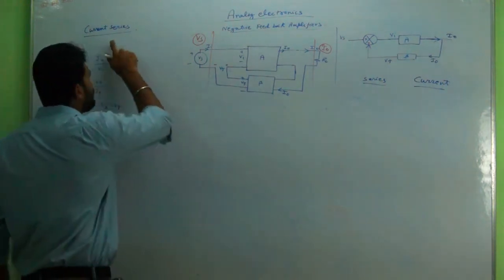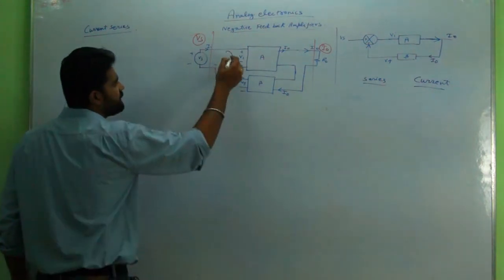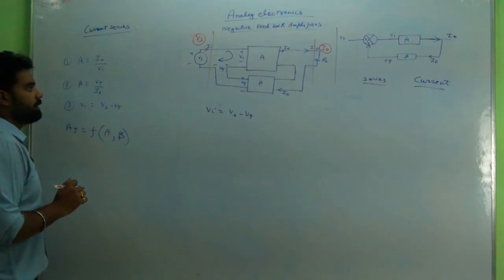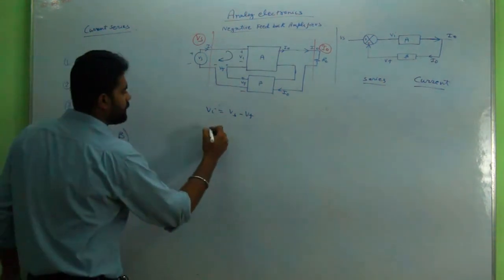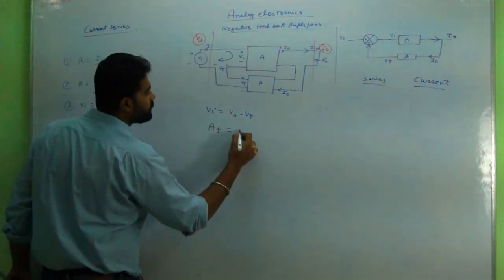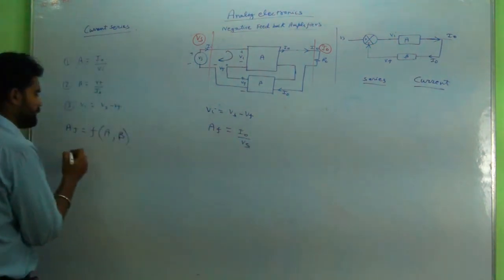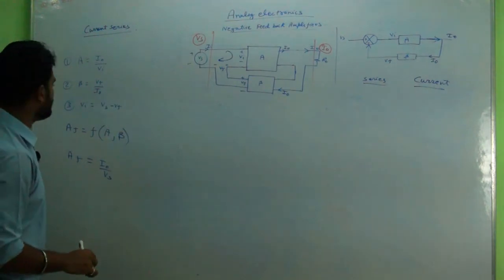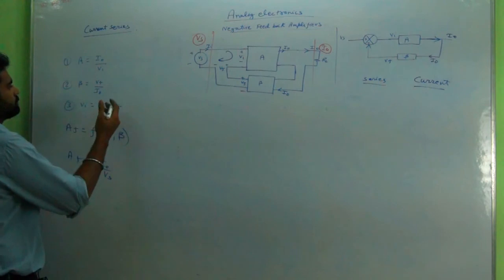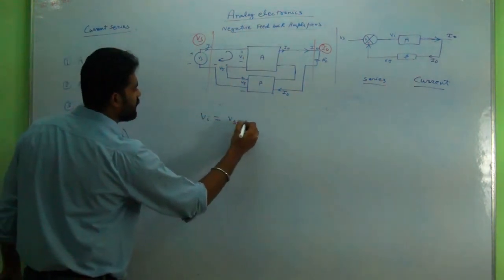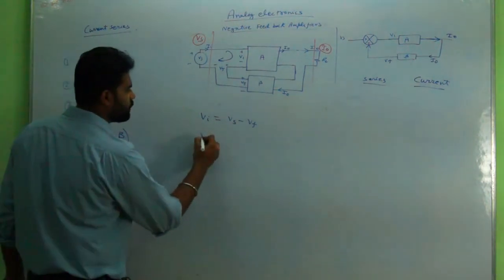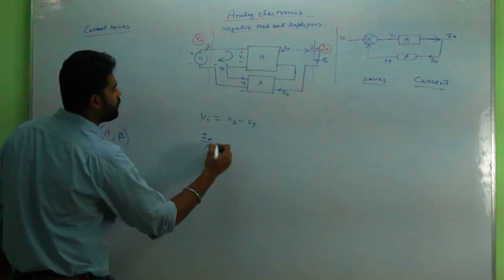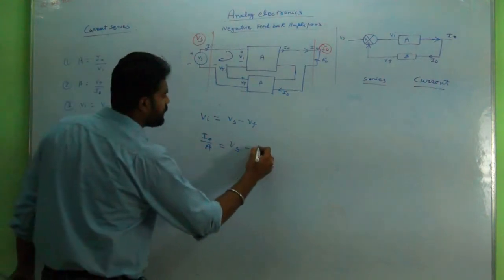We will start with the KVL equation: VI equal to VS minus Vf. AF is I0 upon VS. We keep VS intact and replace VI. VI can be written as I0 upon A, and Vf can be written as beta times I0.